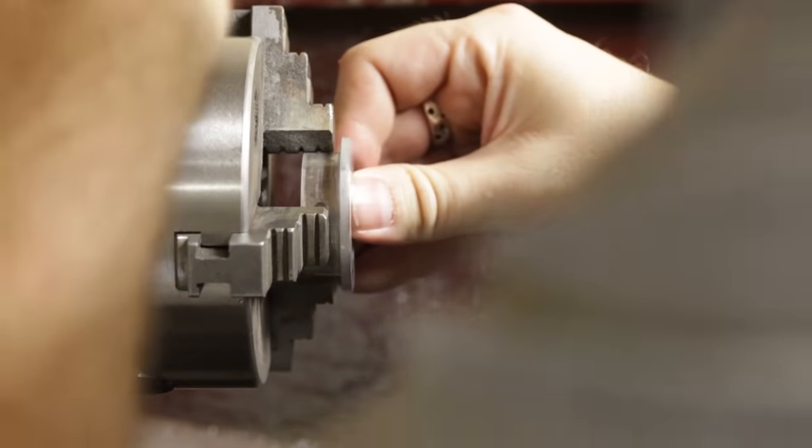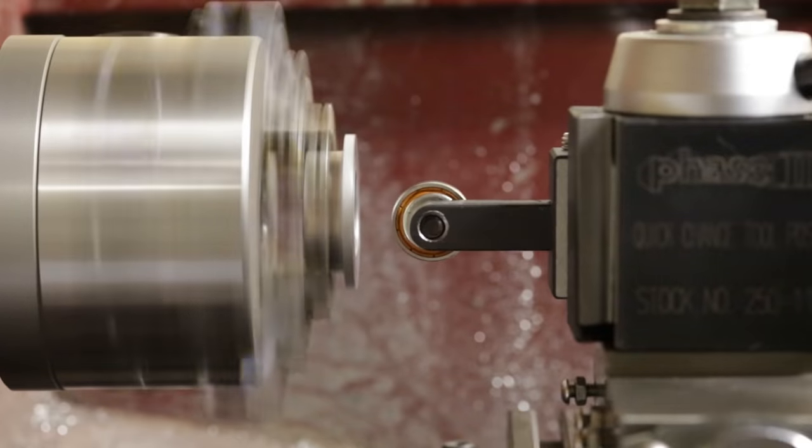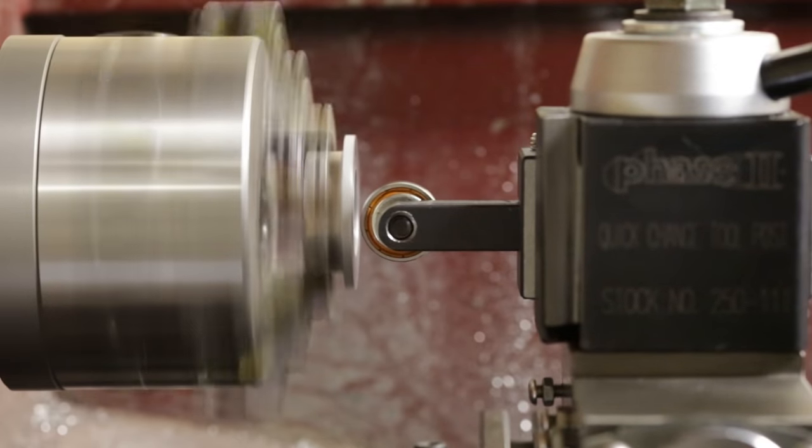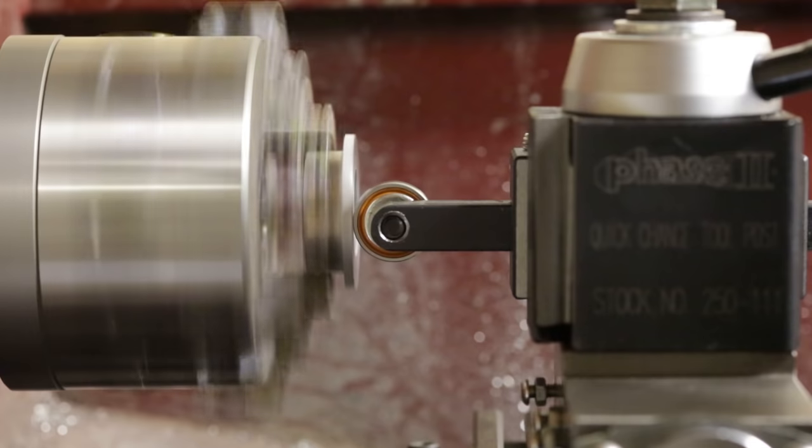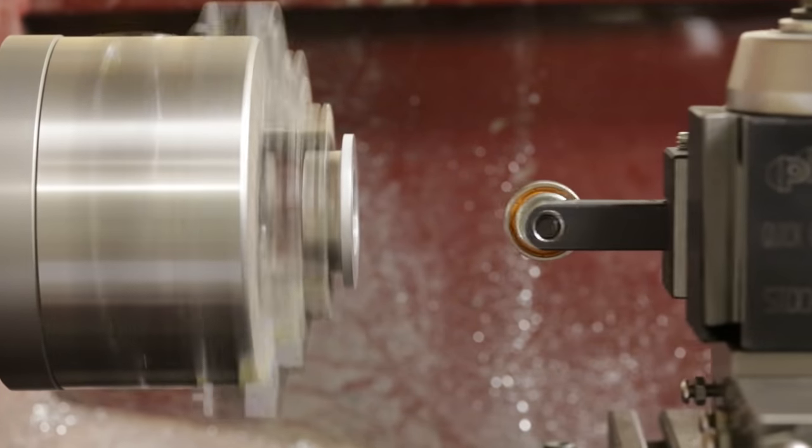To use the centering tool all we need to do is loosely chuck in the workpiece and then slowly slide the carriage into it until the bearing spins and then back off.